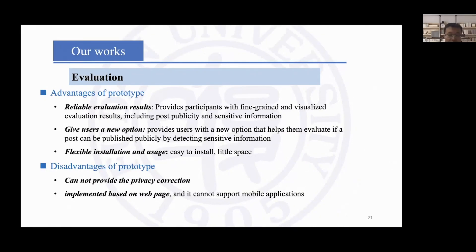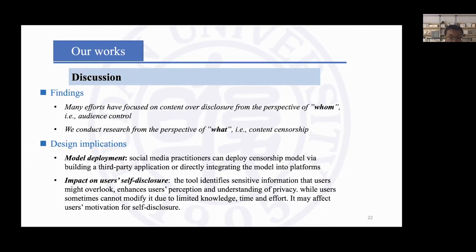The advantages of our model and tools are: first, our tool outperforms other methods on different metrics and provides users with the most acceptable censorship results. It gives users a new option and is flexible to install and use. The disadvantages include that our prototype only serves users with privacy classification and detection, while users expect the prototype to provide privacy correction, and it only works on web pages.